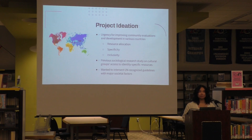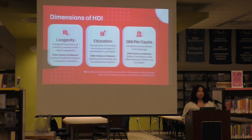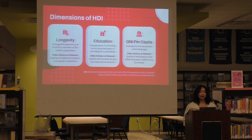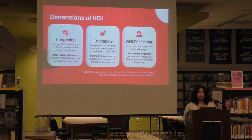I also wanted to intersect this with guidelines established by the United Nations, who have done substantial work in this field. The dimensions of HDI — which stands for the Human Development Index — are longevity, education, and GNI per capita, which is simply the average income per person of working age. Longevity is defined by average life expectancy, translating to the healthcare system. Education is defined as expected years of schooling. GNI per capita is analogous to the general workforce. Below is how HDI is statistically calculated.